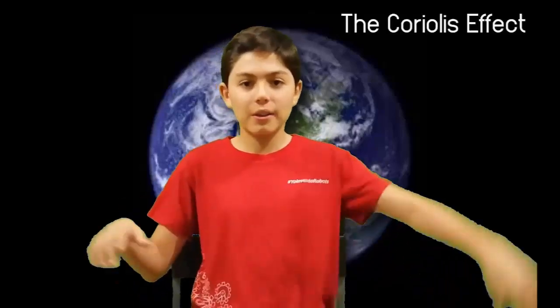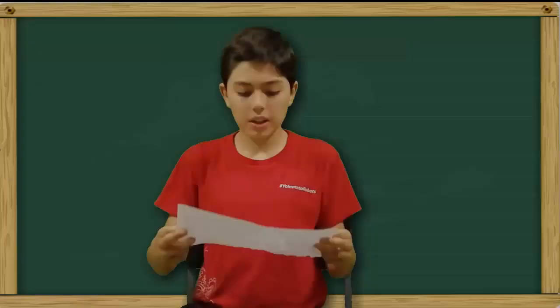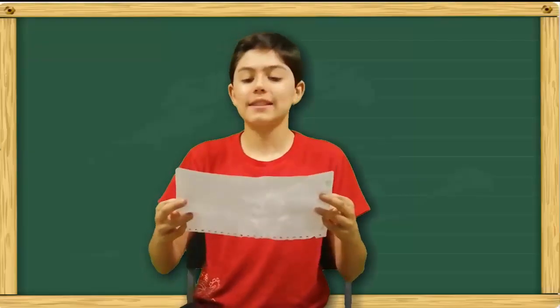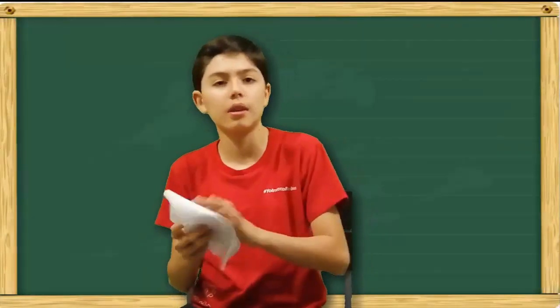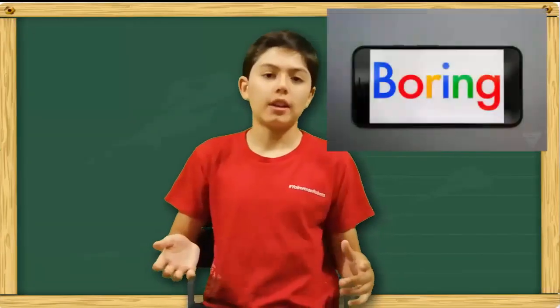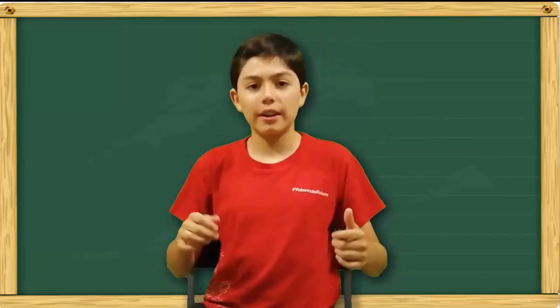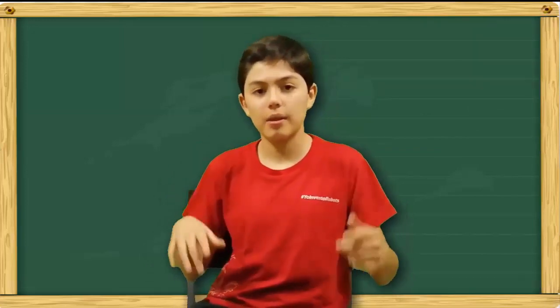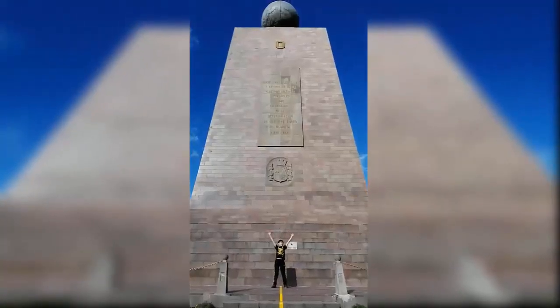Hi everyone! In this video, I'm gonna explain the Coriolis effect and its relationship with latitude. The Coriolis effect is the deflection caused to an object due to a fictitious force. But that's boring — let me show you how it works in a very fun way, and I'll take advantage of where I live, which is in the center of the world!